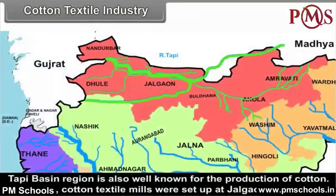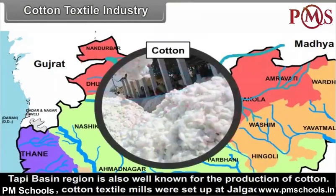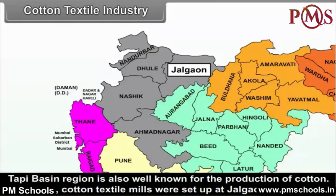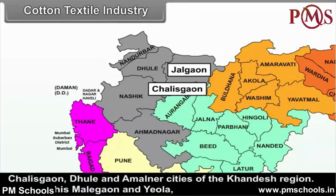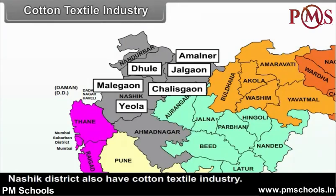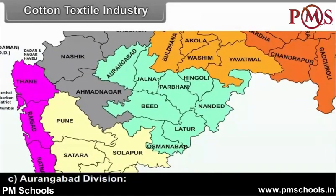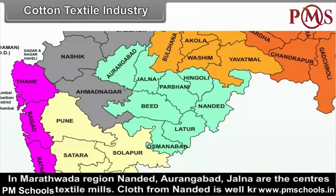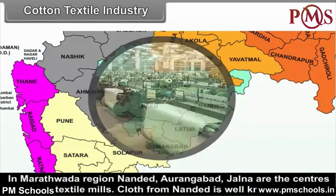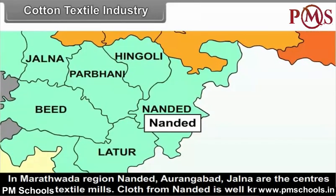In the Nasik Division, the Tapi Basin region is well known for the production of cotton. Therefore, cotton textile mills were set up at Jalgao, Chalisgao, Dhule and Amalner cities of the Khandesh region. Besides this, Malegao and Yevlar in Nasik district also have cotton textile industry. In the Aurangabad Division, in the Marathwada region, Nandur, Aurangabad and Jalna are the centres of cotton textile mills. Cloth from Nandur is well known.